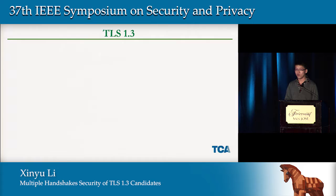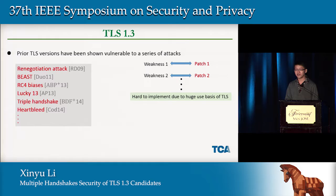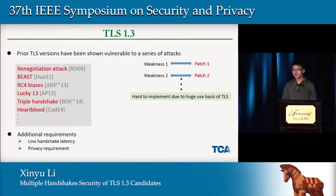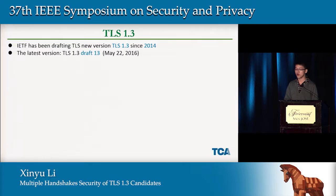Why do we need a new TLS version? Firstly, prior TLS versions have been shown vulnerable to a series of attacks. It is common practice to address each new attack with ad hoc updates and patches; however, this may be very hard to implement due to the huge use of TLS. Since 2014, IETF has been drafting TLS 1.3.